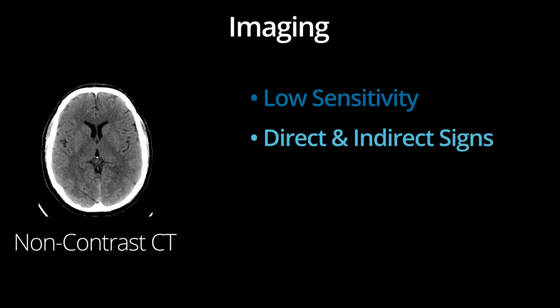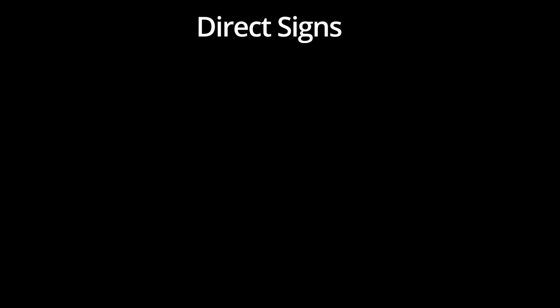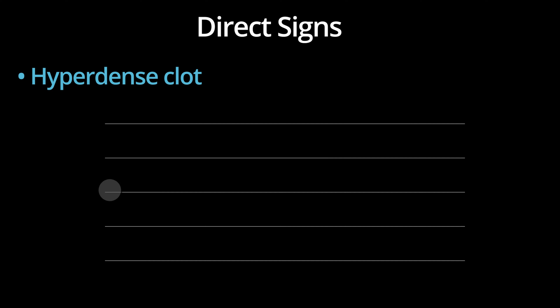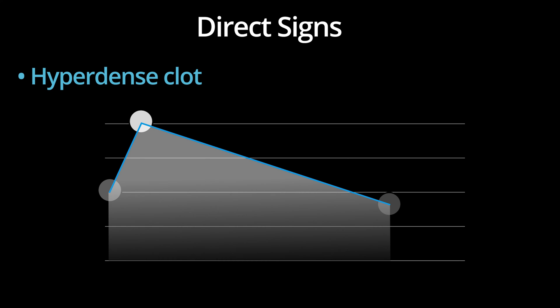Having said that, there are some findings on unenhanced CT which should make you think about CVT. Direct signs include visualization of clot in a dural sinus or vein. The thrombus behaves a lot like parenchymal hemorrhage, and therefore is hyperattenuating for about the first week or so after its formation. Just like blood, clot will become less hyperattenuating over time, making it more difficult to detect. This is a common reason for false negative unenhanced CT examinations.